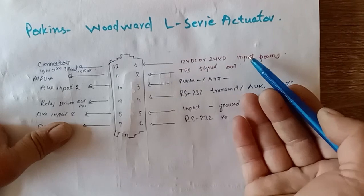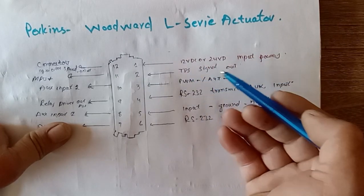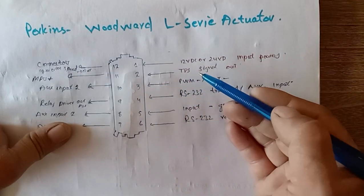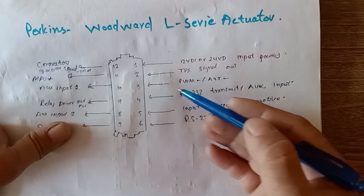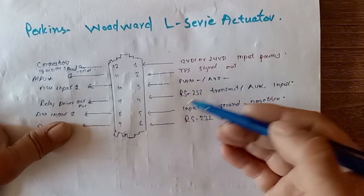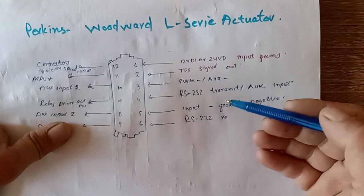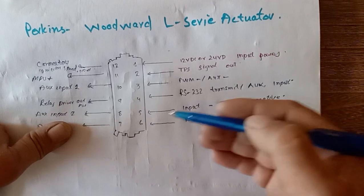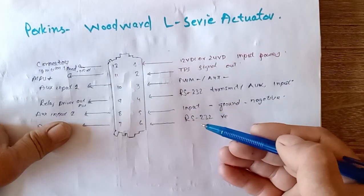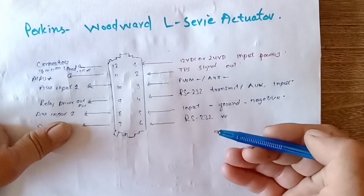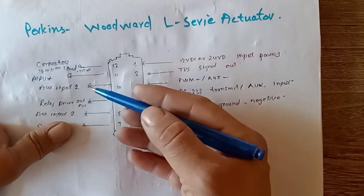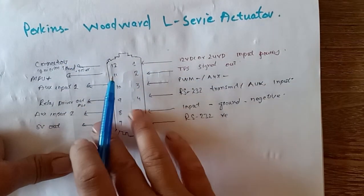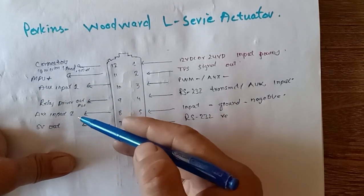First of all, you need to input 12 volt or 24 volt. This one is MPU or throttle position sensor signal out. Three number is pulse width modulation auxiliary. Four number is RS-232 transmit auxiliary input. Five number is input ground negative.